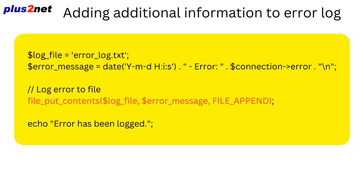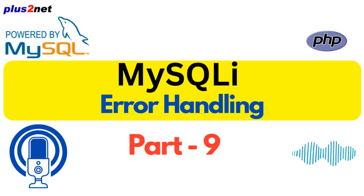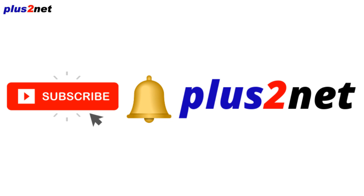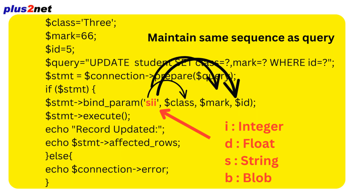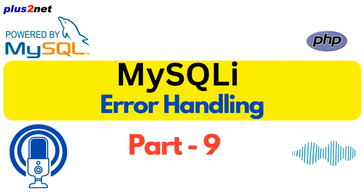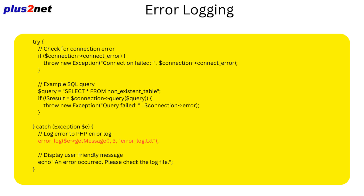`error_log` is like a black box flight recorder for your application. Every time an error occurs, it swoops in and records the details: what happened, where it happened, and a timestamp of exactly when. Even if you can't prevent every error, you have a behind-the-scenes record of what went wrong. This is crucial in a live environment where you don't want to bombard users with raw error messages. On the front end, you handle the error gracefully — maybe display a generic 'oops, something went wrong' message — while behind the scenes `error_log` quietly collects all the evidence you need to debug later.